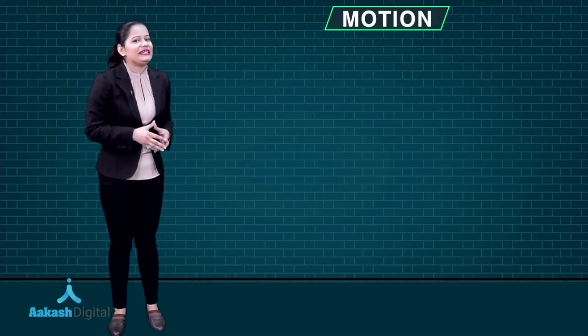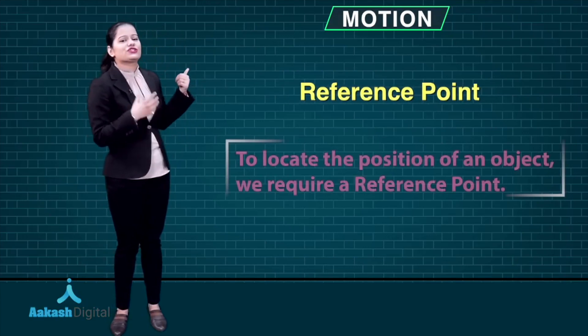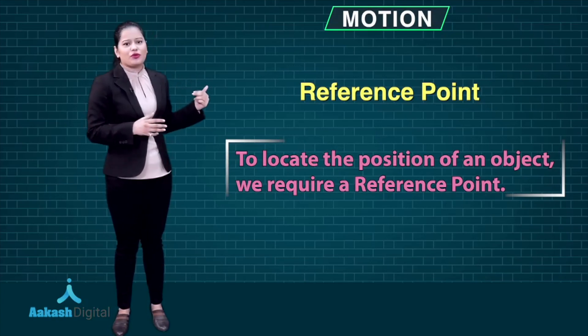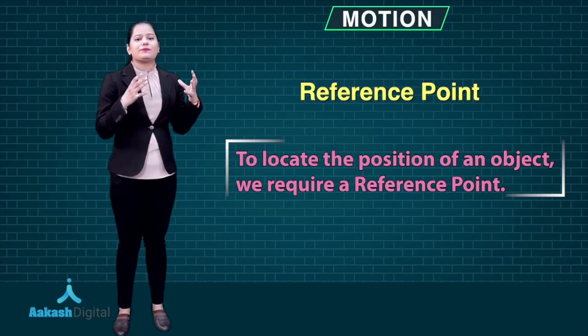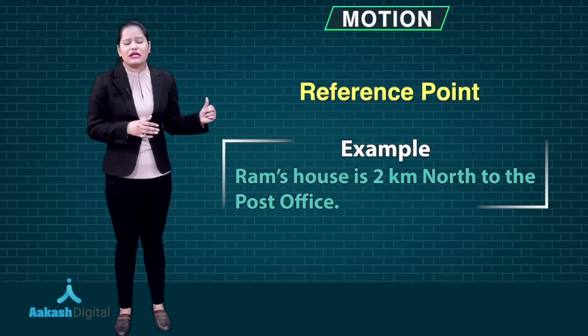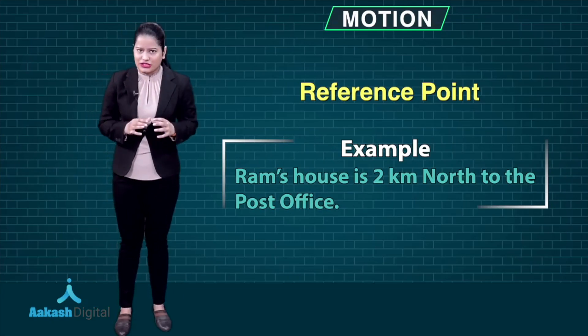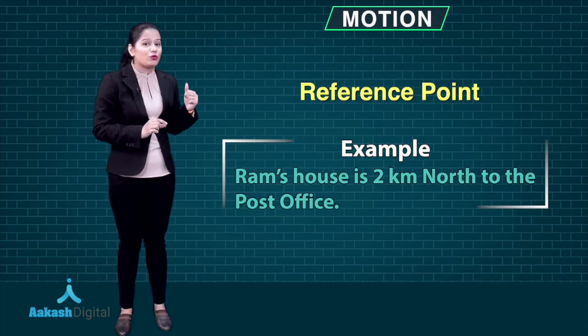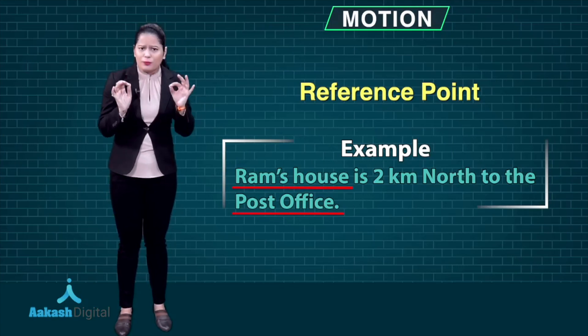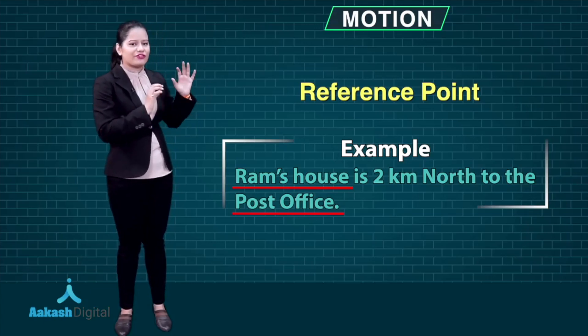To say that an object is in motion, first of all we need to locate the position of that object. To locate the position, we need a reference point, which is also called the frame of reference or origin. A reference point is a point which is required to locate the position of an object. For example, if I say Ram's house is 2 kilometers north of the post office, then the post office is the reference point of Ram's house.